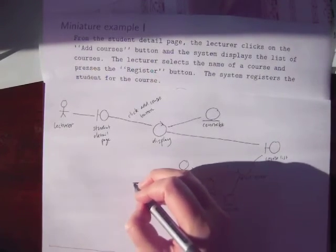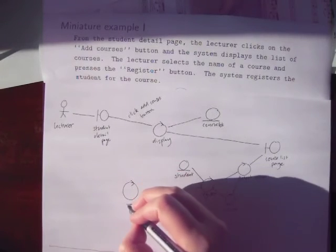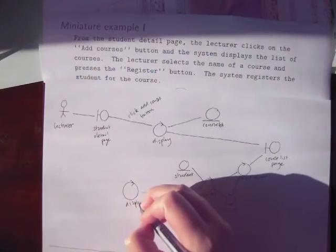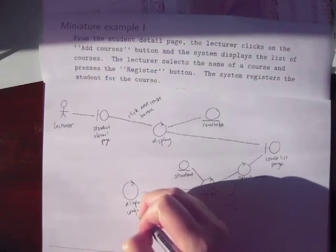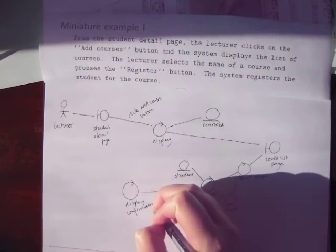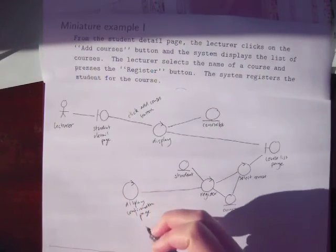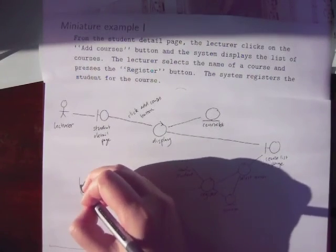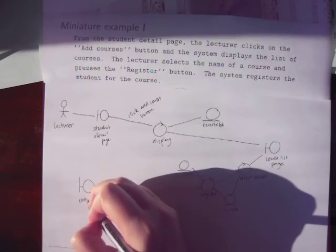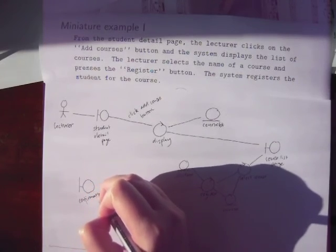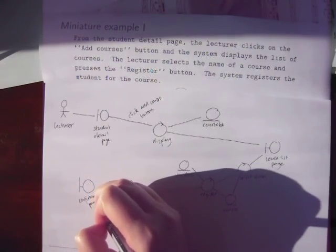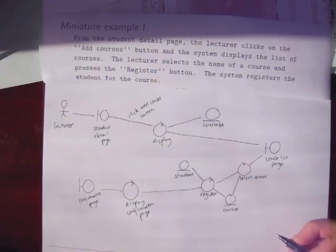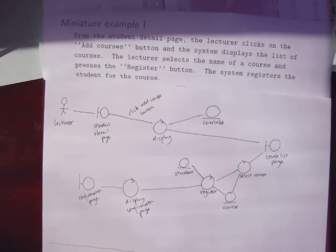So you go on to a new controller, which is going to be Display Confirmation Page. And you've discovered a new boundary object, which is the confirmation page itself. And that is now a picture of the Sunny Day course of this use case. We'll see you in the next one.